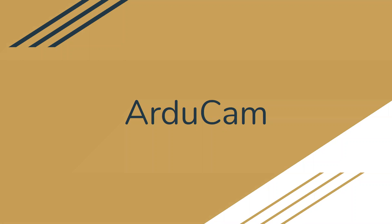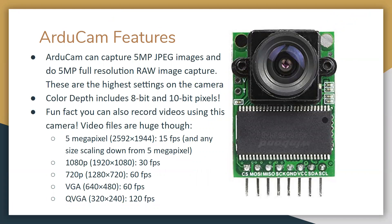Let's look at the ArduCam quickly to start getting a sense of what we're going to be dealing with. The ArduCam features include capturing 5 megapixel JPEG images and a 5 megapixel full resolution RAW image. These are the highest settings on the camera — we could reduce the settings to take up less space. This is very important because we are going to have to be very careful with how much memory we have and the timing it takes to do everything.